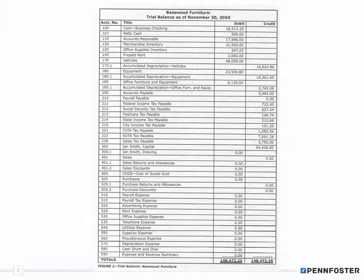The other thing about the trial balance is notice that our debits still equal our credits. When I add up all of my debits, they equal my credits when I add them all up. What happens to a lot of people is they make their journal entries thinking their debits equal their credits, and since all we're doing is rearranging the information when we post to the ledger accounts, theoretically our debits still should equal our credits. You do the math to get the balance in the accounts, and when you have the balances, all you're doing is transferring that information onto the trial balance.